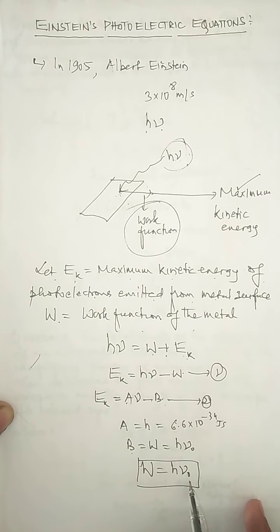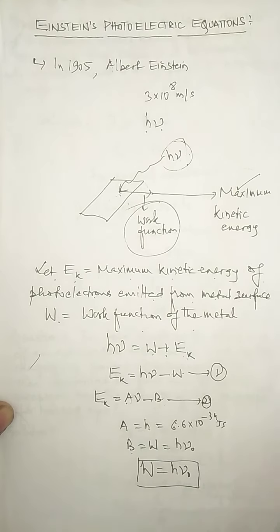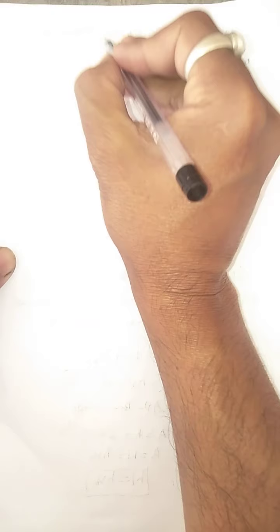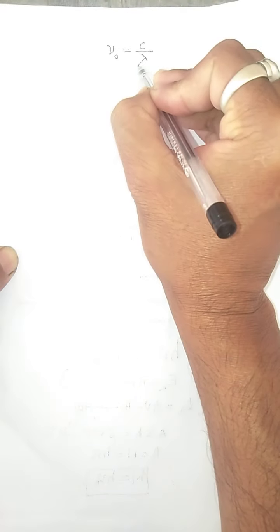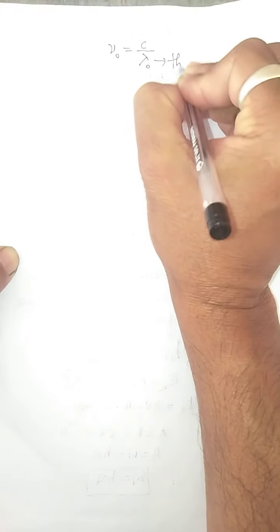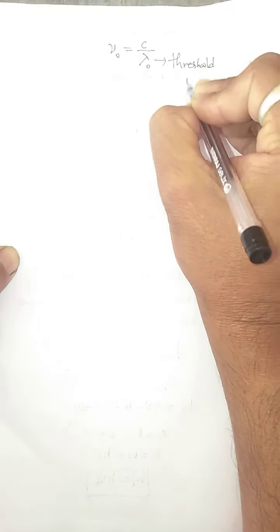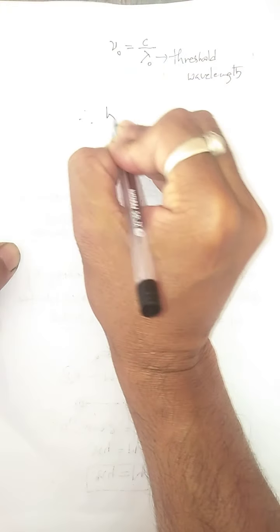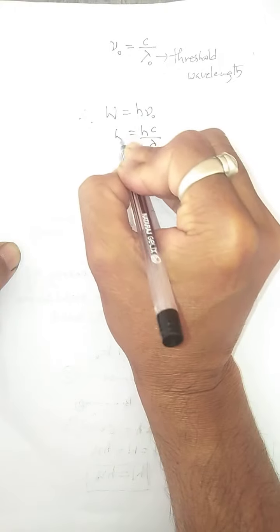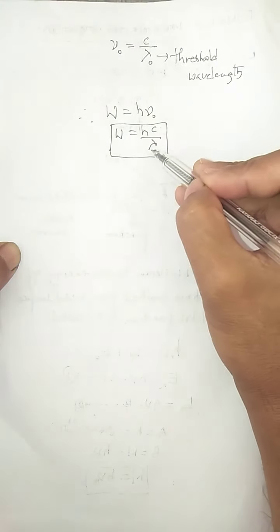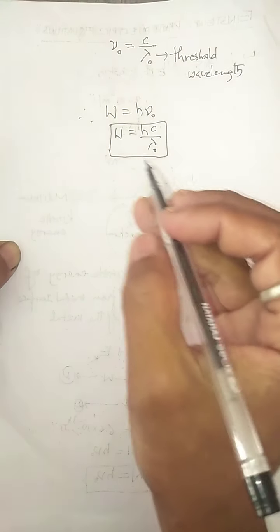This work function expressed in terms of hν₀ is in terms of the threshold frequency. ν₀ is called the threshold frequency or minimum frequency. Since there is also a corresponding wavelength, if we express the work function in terms of wavelength, that wavelength is called the threshold wavelength λ₀. The threshold frequency equals the speed of light c divided by λ₀. Therefore, work function W = hc/λ₀. Note: threshold wavelength is the maximum wavelength, while threshold frequency is the minimum frequency.